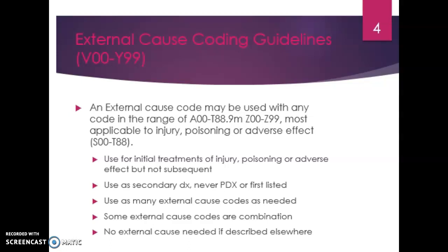Some external cause codes are combinations that tell us how and where — for example, if a patient was struck in hockey by a field stick, that code combines being struck in a sport and by what. If the intent is already included in another chapter, like a poisoning code from the table of drugs and chemicals, we don't need an additional external cause code. But if it was a suicide attempt by another method, we would want to pick that up with an external cause code.